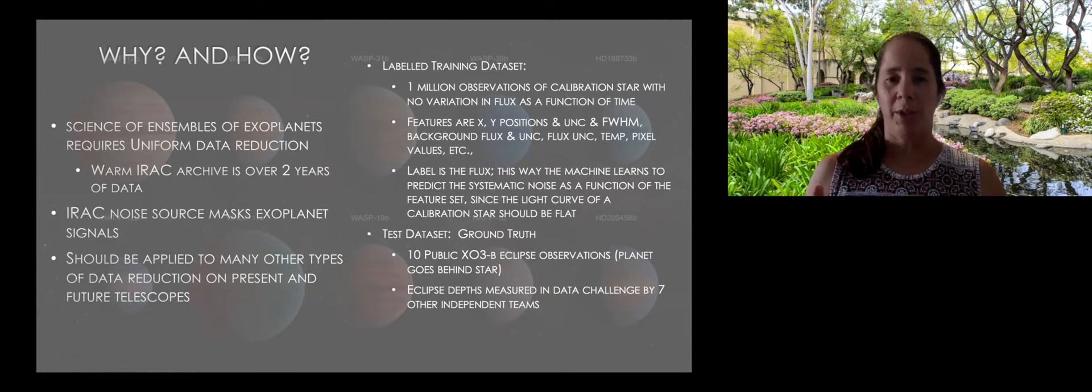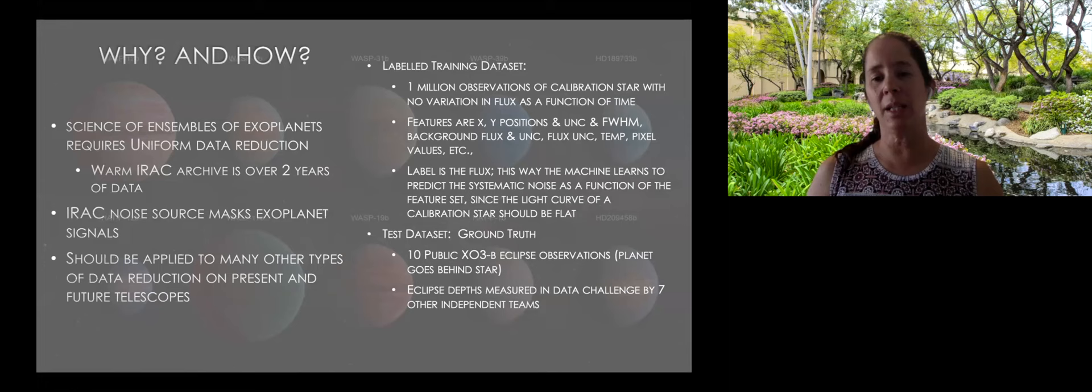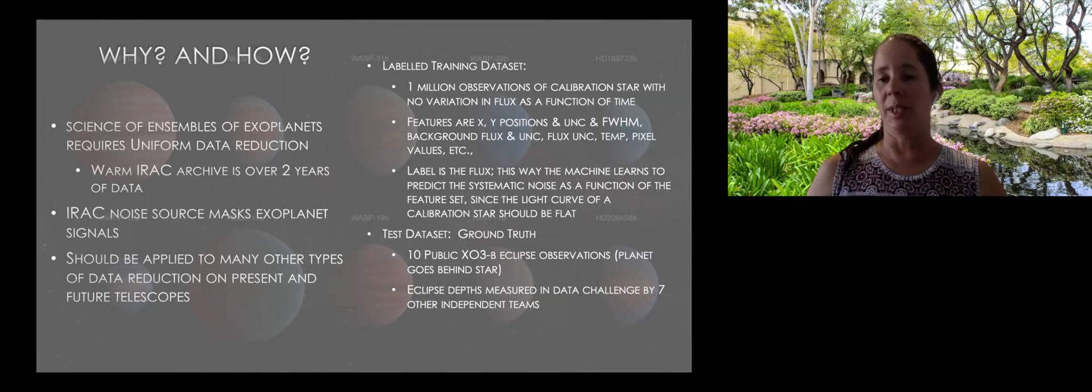So I break my training set into test and training data sets. We have an additional data set, which I call the ground truth, not ground tooth, to test. How well is this thing actually doing? We would like to know a truth. Unfortunately, because this is astronomy, we don't have any real truth, but the closest thing we have are 10 public eclipse observations of the planet XO-3B. And because this observer did 10 observations, it's super helpful because we can take the average of that and assume that that is the actual true eclipse depth. So that will be my ground truth. In addition, this data set was used as a data challenge by seven other independent teams a few years back. So I'm going to be able to compare my results using machine learning with what these other seven teams did.